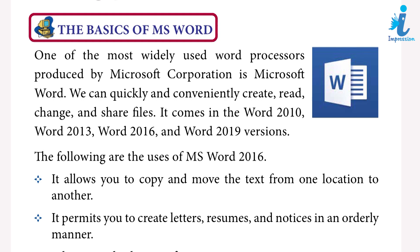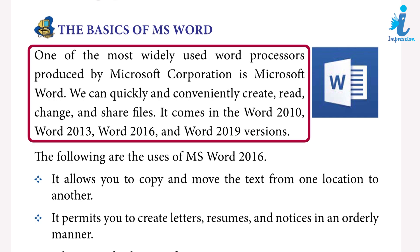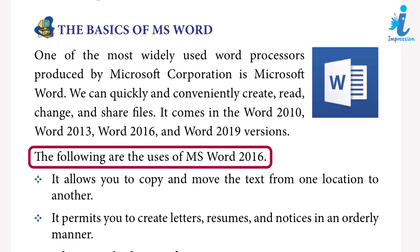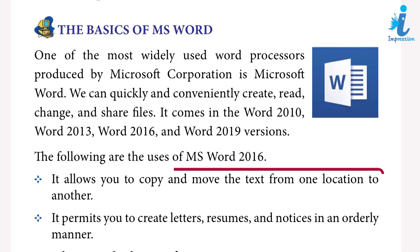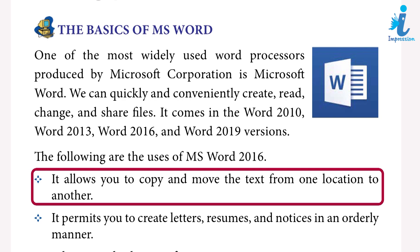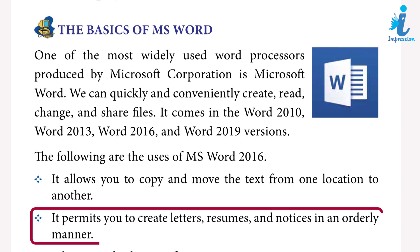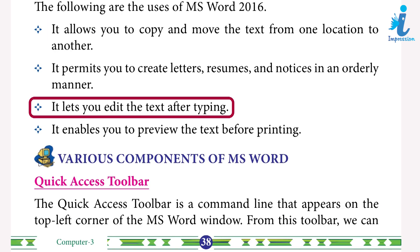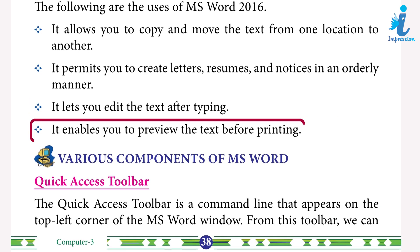The basics of MS Word: one of the most widely used word processors produced by Microsoft Corporation is MS Word. We can quickly and conveniently create, read, change, and share files. It comes in Word 2010, Word 2013, Word 2016, and Word 2019 versions. Uses of MS Word 2016: it allows you to copy and move text from one location to another, and it permits you to create letters, resumes, and notices in an orderly manner.